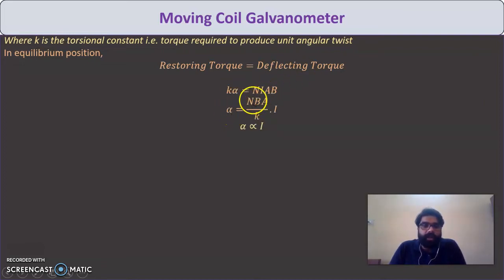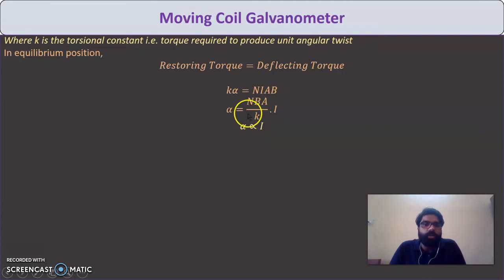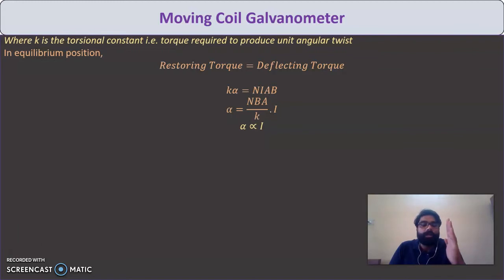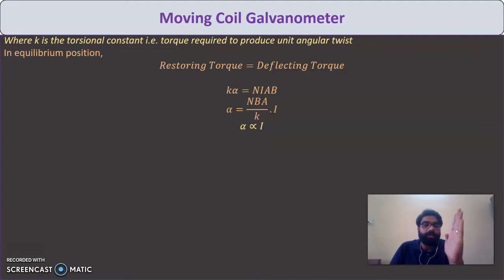From Kα = NIAB, we get α = NIAB/K. Here N is number of turns, B is magnetic field, A is area of rectangular coil, and K is torsional constant. Since N, B, A, K are all constant, α is directly proportional to current I. So greater current means greater deflection. The galvanometer detects the presence of current and shows angular deflection proportional to it.